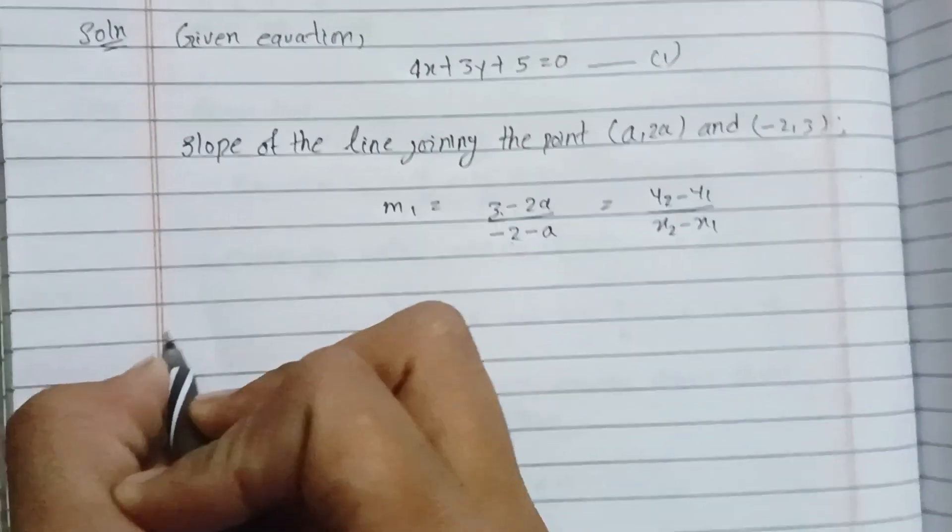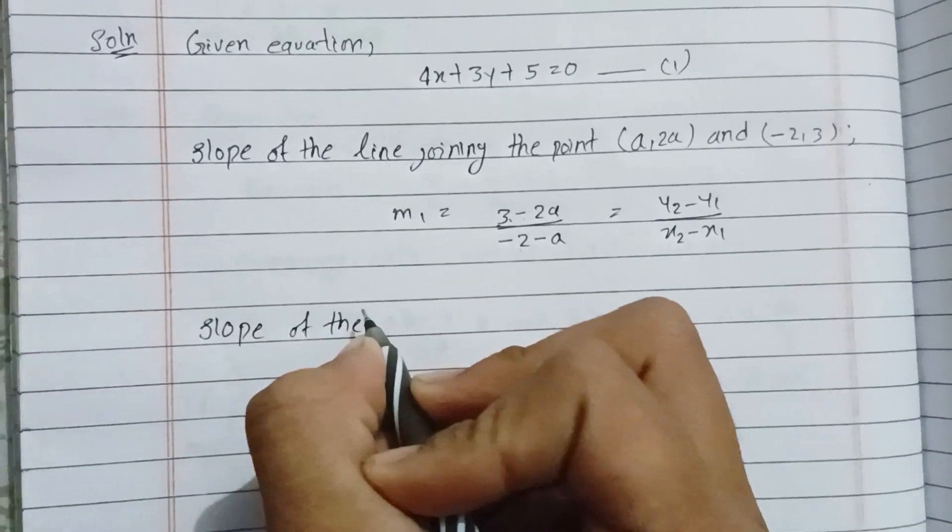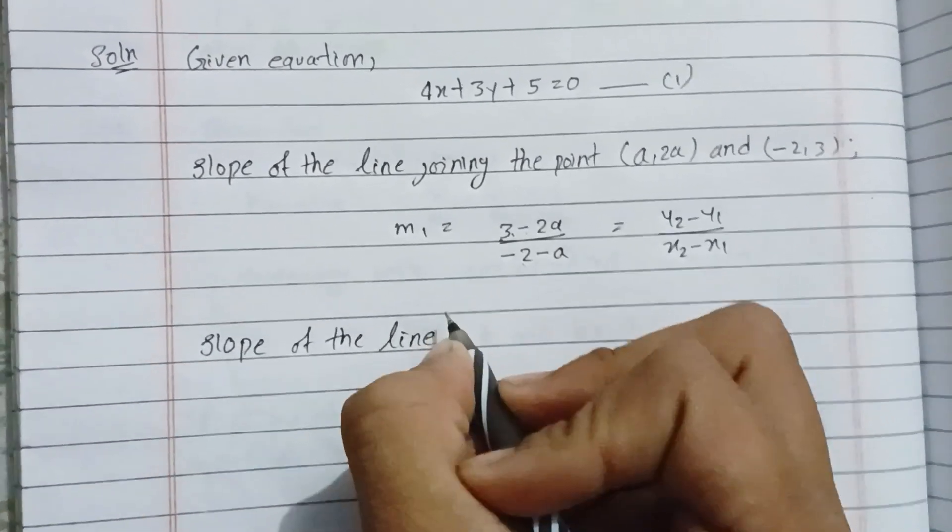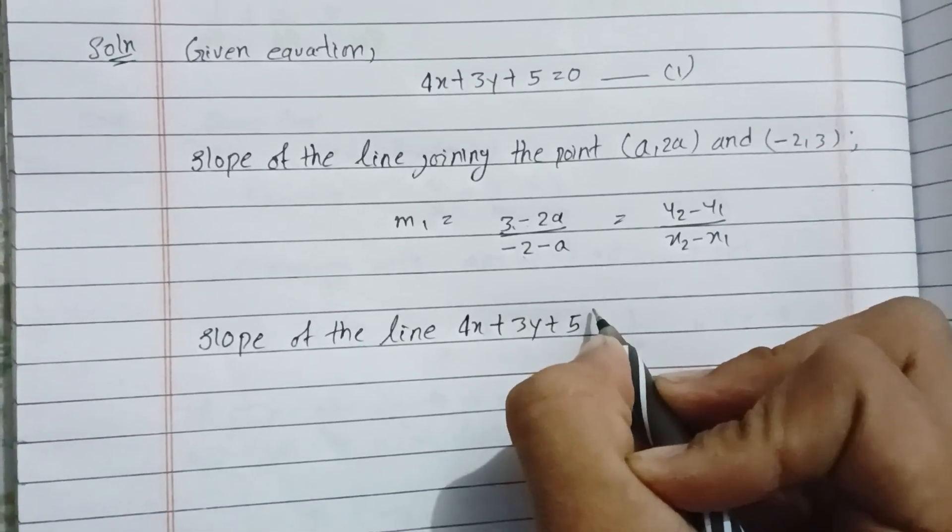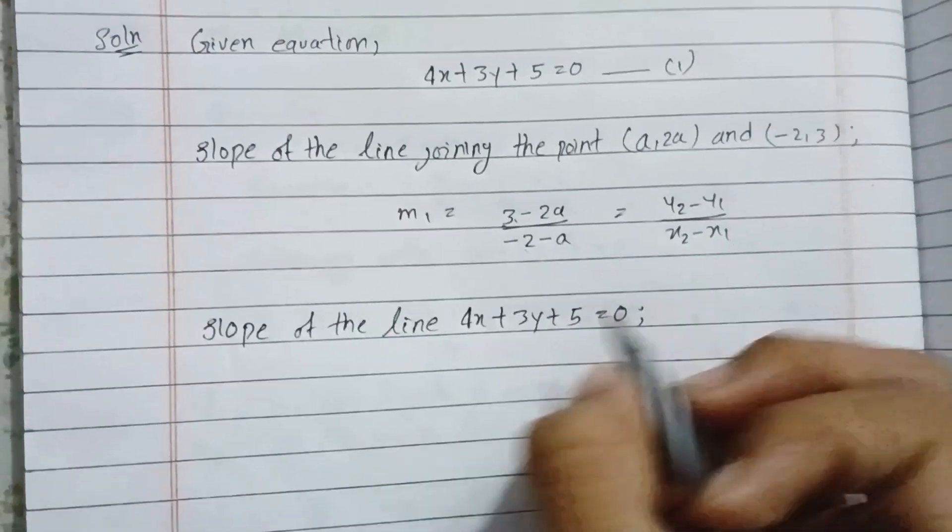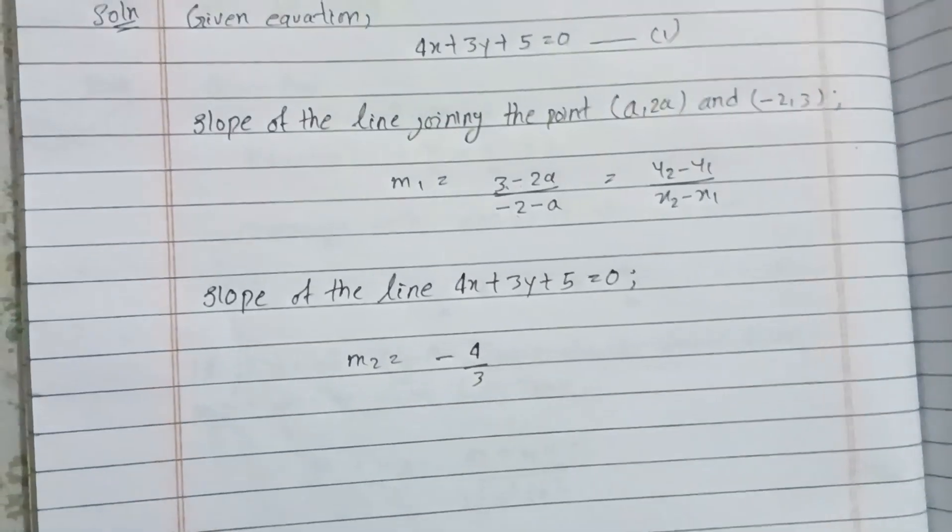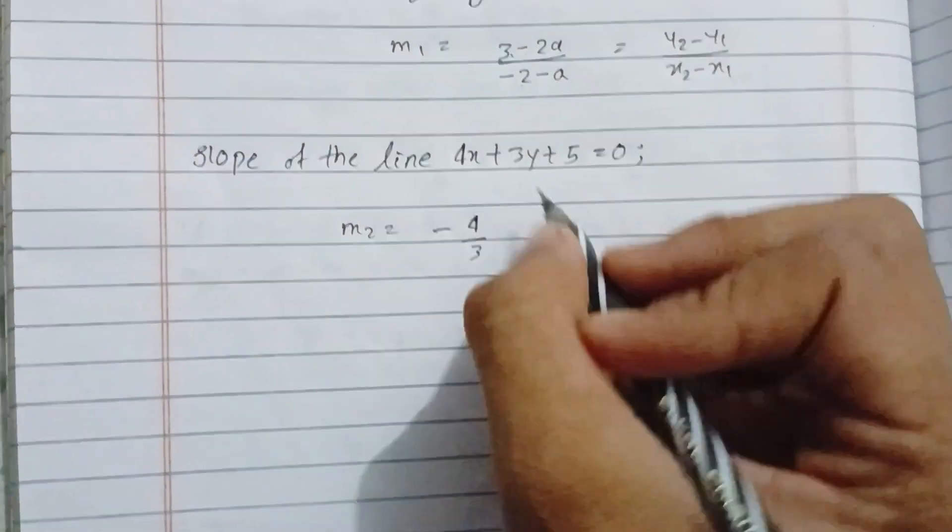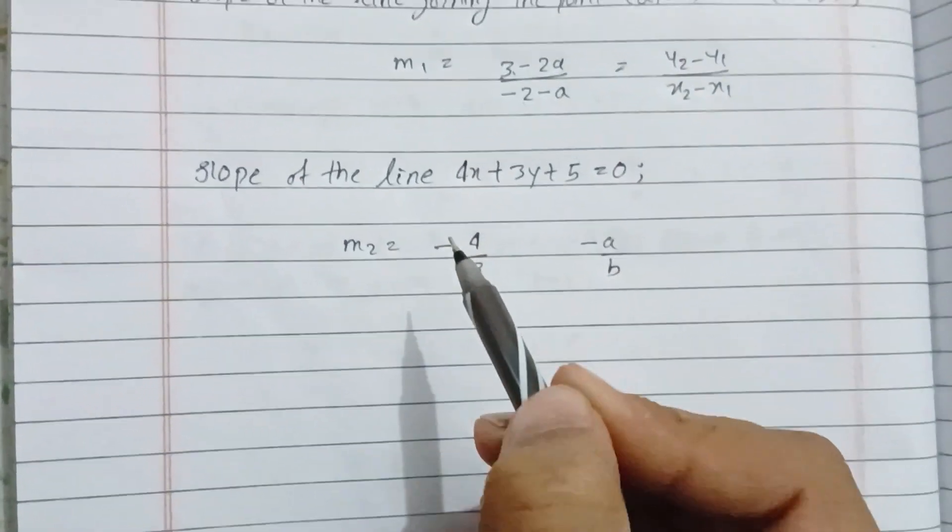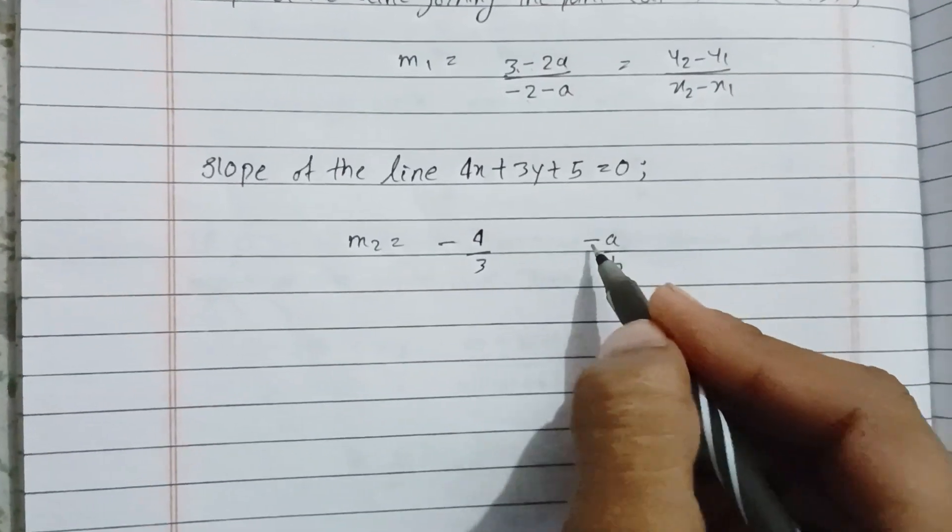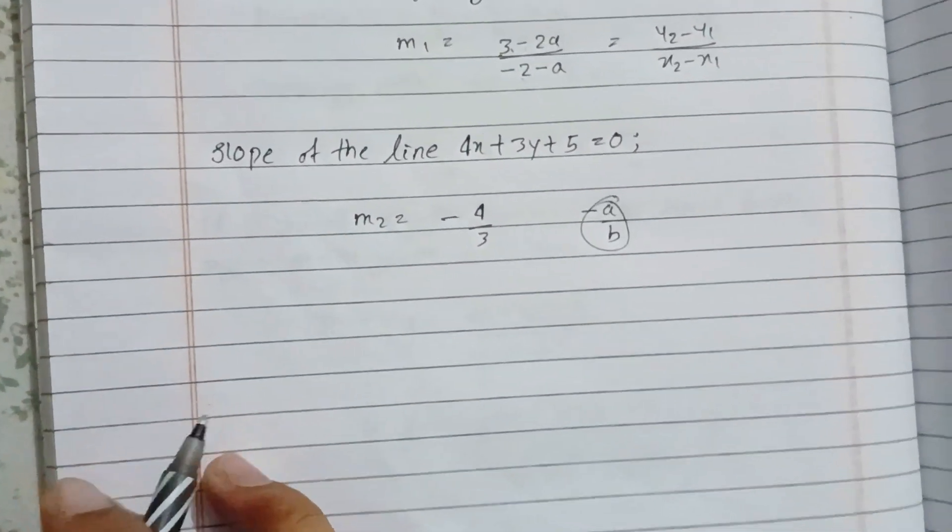Now for the slope of the line 4x + 3y + 5 = 0, we get m2. That is m2 equals -4/3. The slope is negative x coefficient over y coefficient.